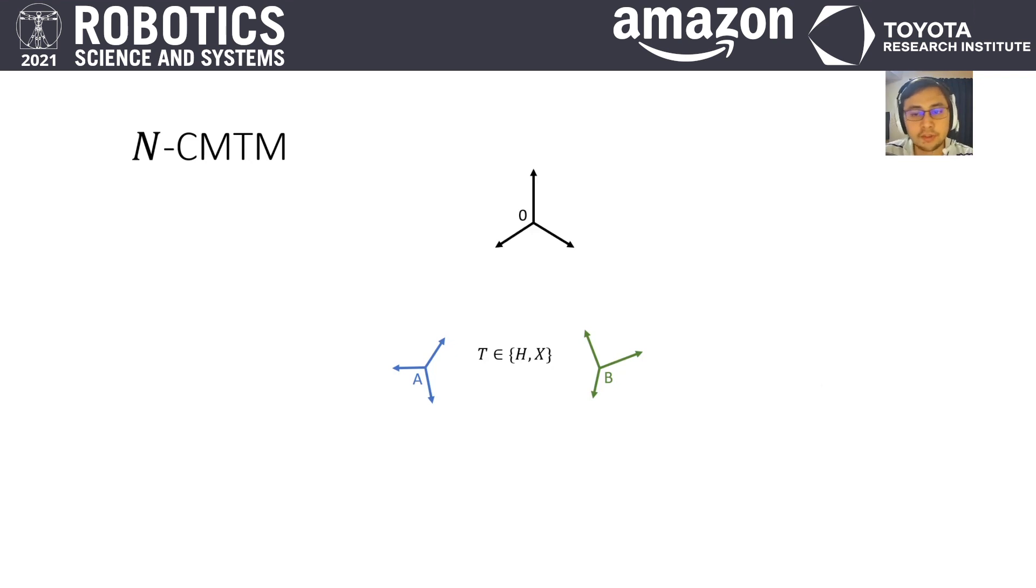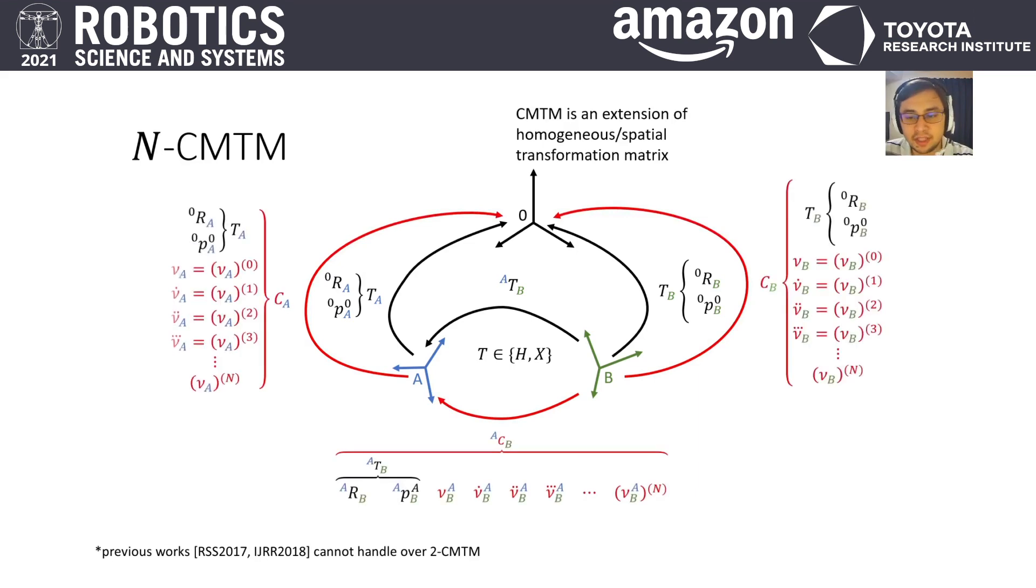Let's first have a look at NCMTM. We need a quick reminder of classic transformation matrices. Homogeneous and spatial transformations represent position and rotation of one frame relative to another frame. The NCMTM does the exact same thing, but also represents angular velocity, linear velocity, angular acceleration, linear acceleration and all above derivatives. So NCMTM is a transformation matrix and behaves like one.